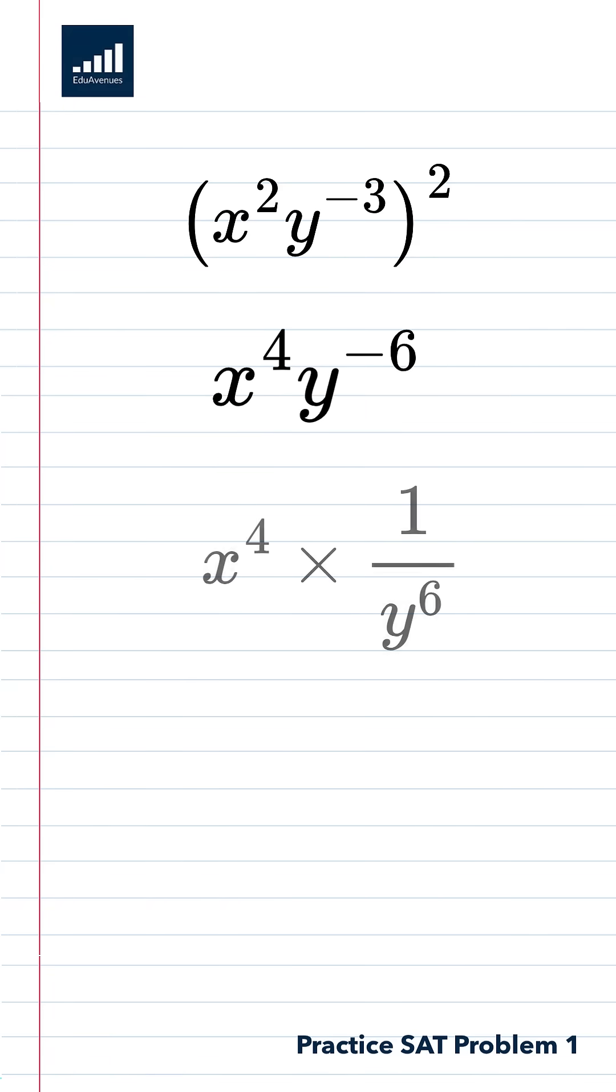Now, let's apply all five rules with one SAT-level practice problem. What's x squared times y to the negative third all squared? Use the power rule. Multiply each exponent by two. You get x to the fourth times y to the negative sixth. Now, deal with the negative exponent. And now, you get a final answer of x to the fourth over y to the sixth.